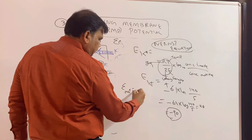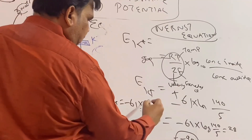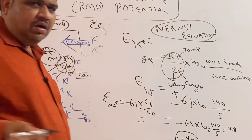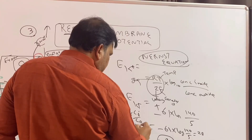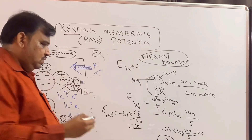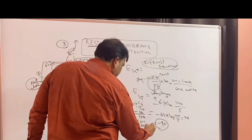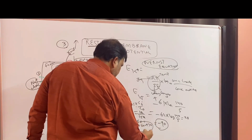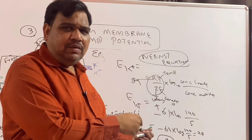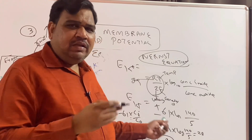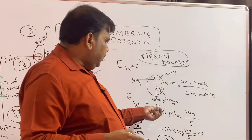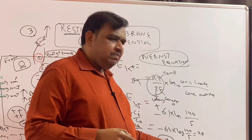Same way, I can calculate the equilibrium potential for sodium using the same formula — minus 61 × log([inside]/[outside]). For sodium: concentration inside is about 110, concentration outside is around 142 to 145. Using this equation, the equilibrium potential for sodium calculates to approximately plus 62 to plus 70 millivolt. So equilibrium potential of potassium is minus 90 and equilibrium potential of sodium is around plus 62 to plus 70.